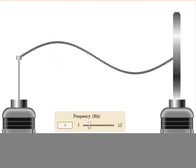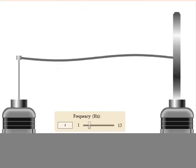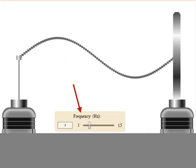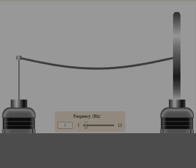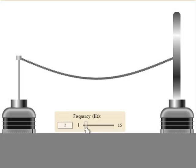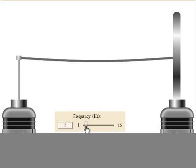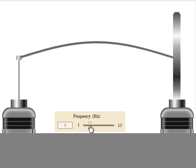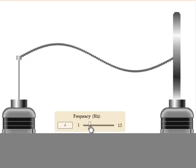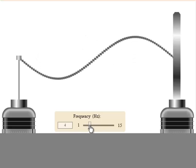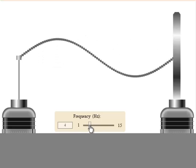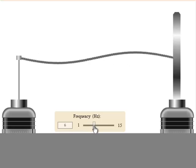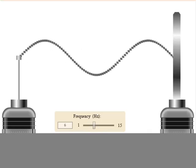You can produce different standing waves by shaking the rope at different frequencies. Once you find a frequency that produces a standing wave, doubling or tripling the frequency will also produce standing waves. The higher the frequency, the more nodes and anti-nodes are produced.